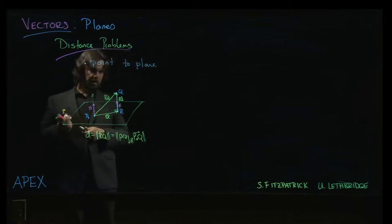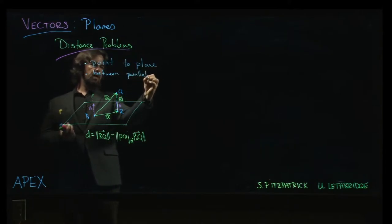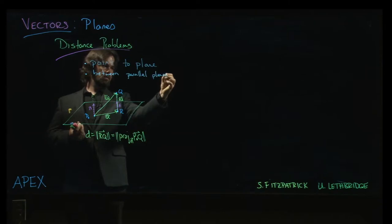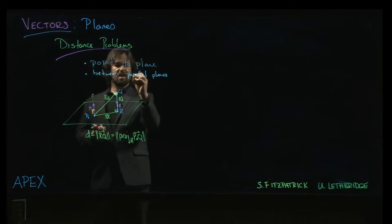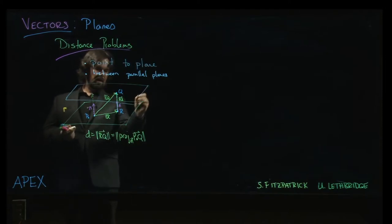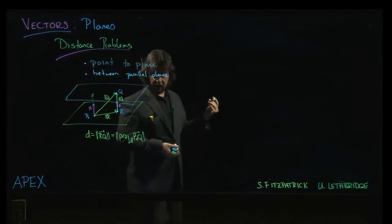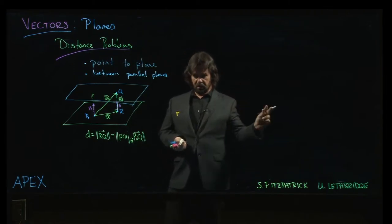Other distance problems that we could do. Well one would be between parallel planes. That's certainly another option that we could consider. And at first this seems like a more complicated problem, but it's really not because what happens is you draw your second plane. And so you've got your second plane which is parallel to the first. And we have the usual information about the plane. Point on the plane, normal vector.